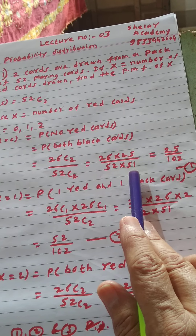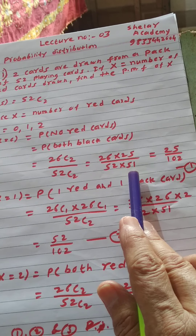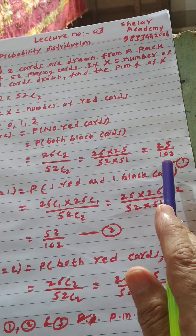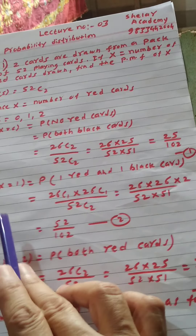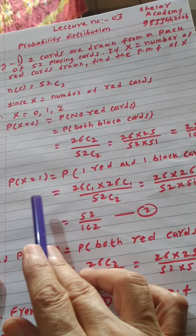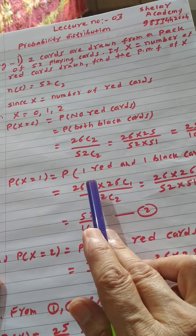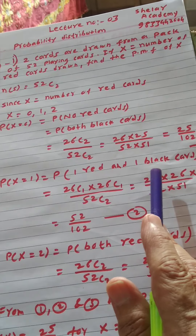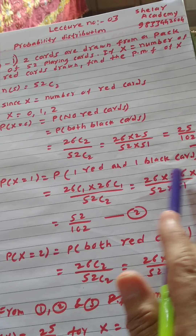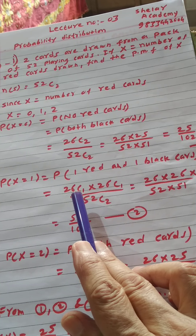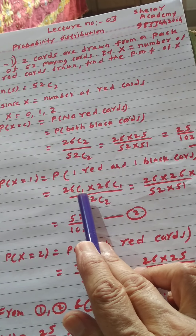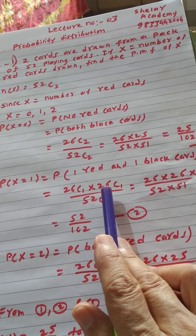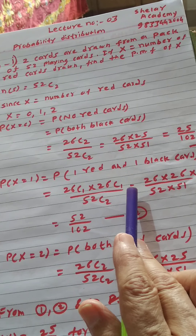N(S) is equal to 52C2, because from 52 cards any two cards are drawn — that is the number of sample points. Since capital X equals the number of red cards drawn, then out of those two cards, we can have no red card, one red card, or two red cards. These are the possible values for capital X.